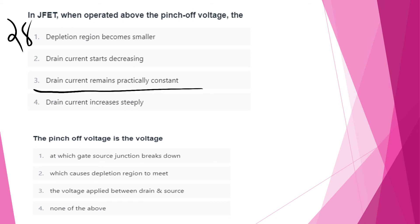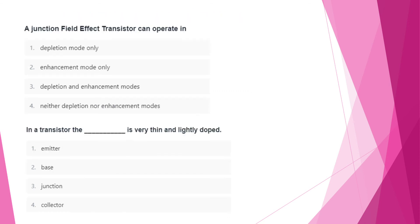Pinch-off voltage is the voltage which causes the depletion region to meet. We are learning about pinch-off voltage. An N-channel JFET operates in depletion mode.